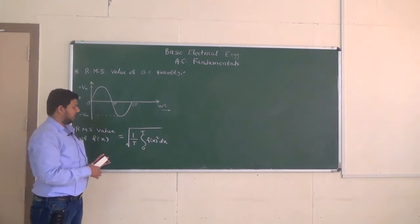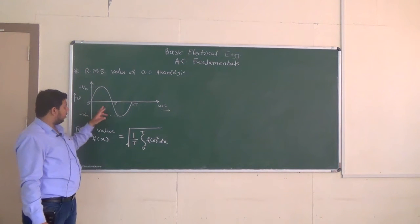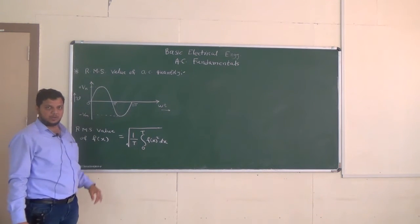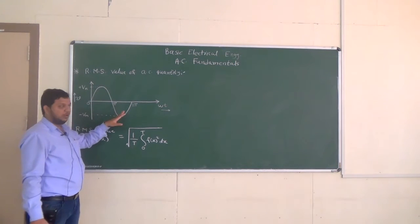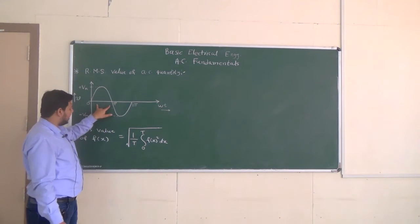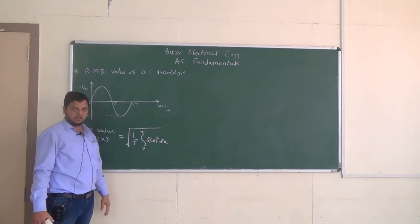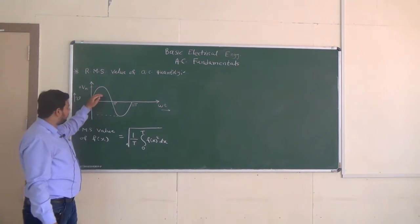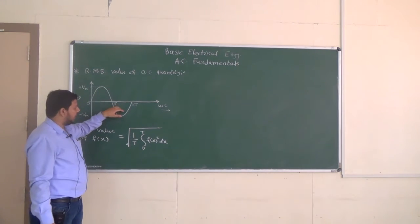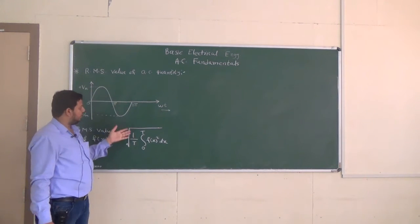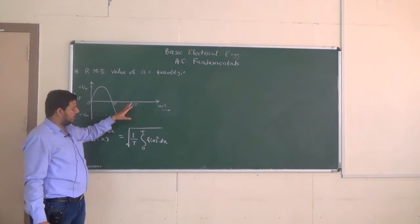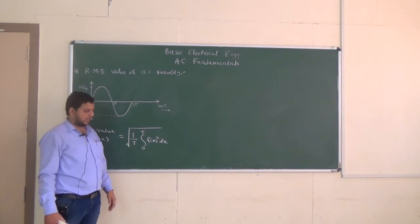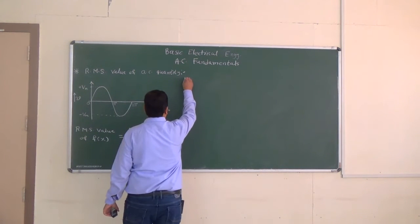One important thing: in the case of average value, we get two different values — one for full cycle and one for half cycle. But for RMS value there will be only one value, even if you consider half cycle or full cycle for a sinusoidal quantity. Why? Because here we are taking x², and the square of a positive or negative value is always positive. So we can consider either half or full cycle; for simplicity we will consider the full cycle.